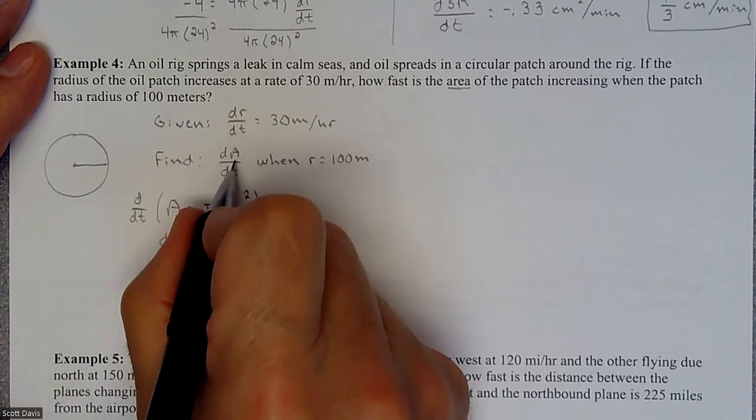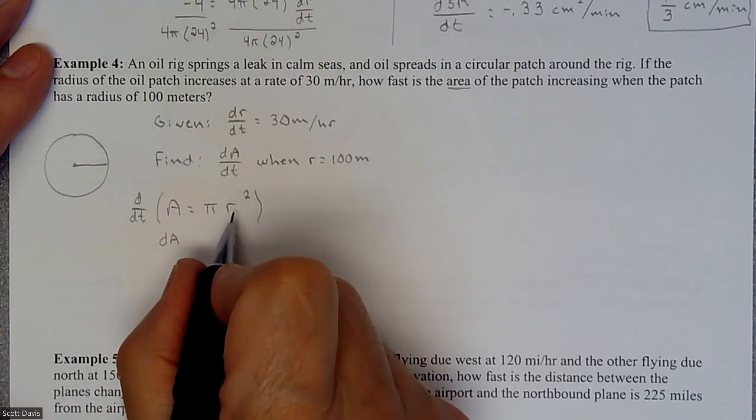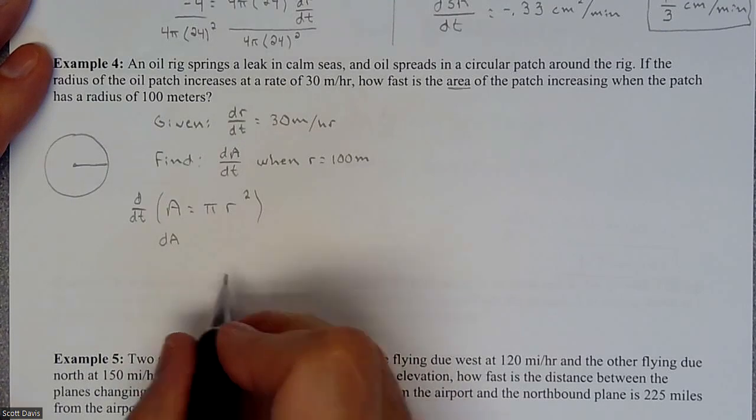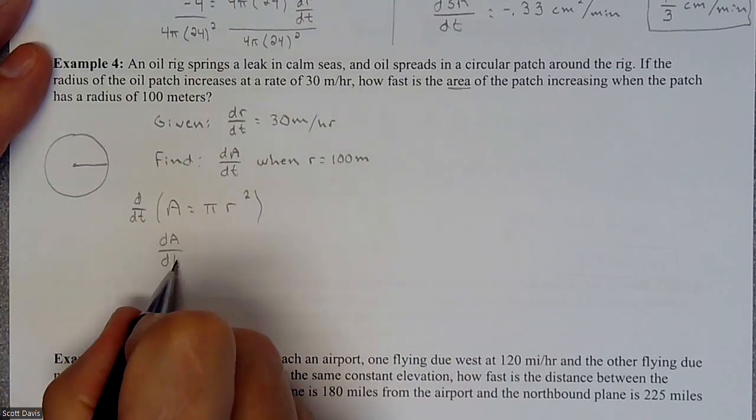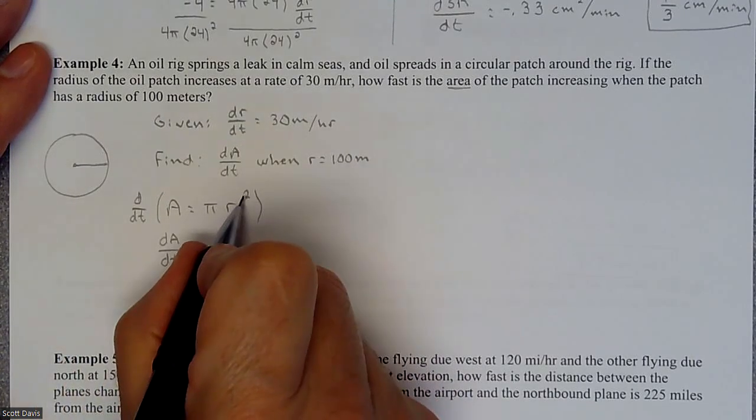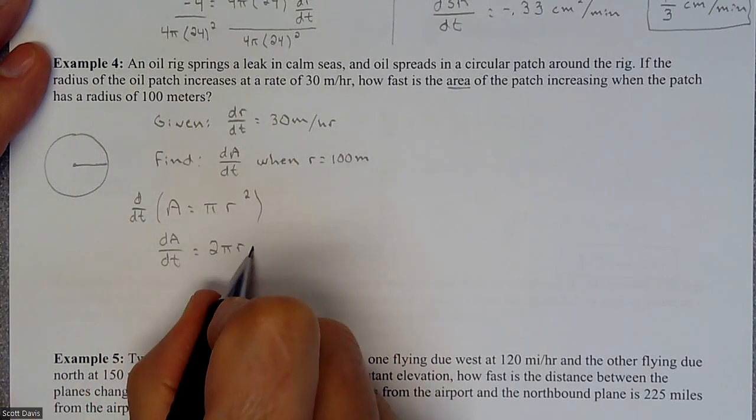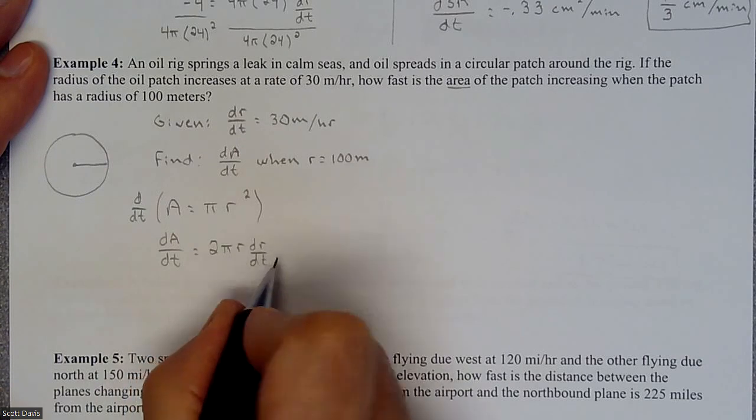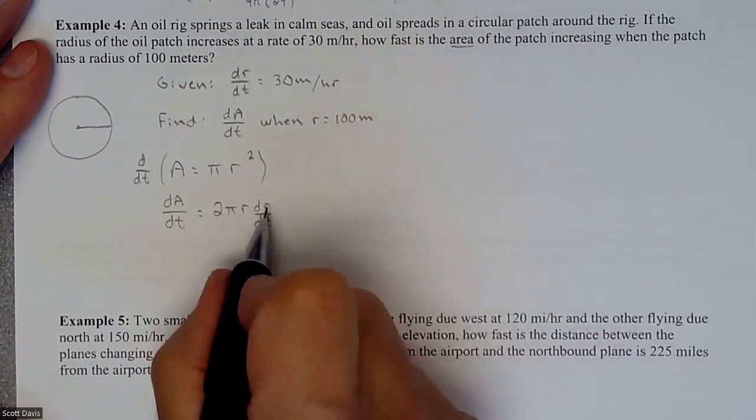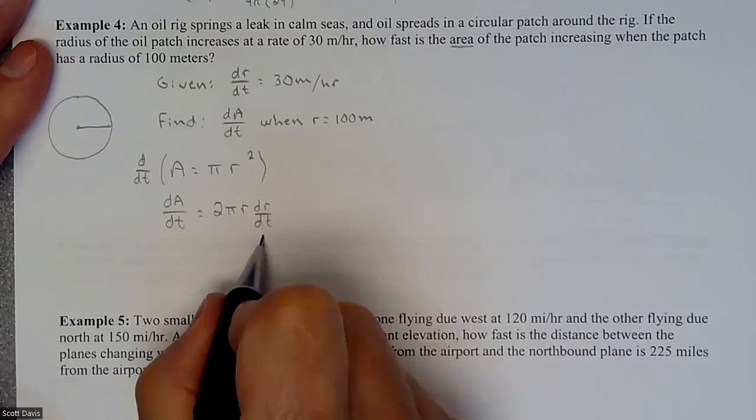I need to know what we're looking for and build some sort of an equation that's going to give us that. If I do the derivative of this we would get 2πr times dr/dT. We have a chain rule and we're doing the derivative of r with respect to time.